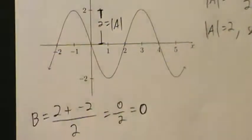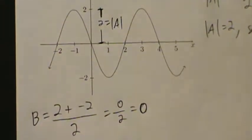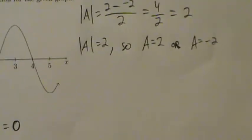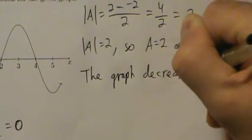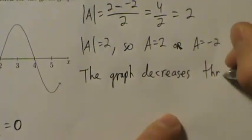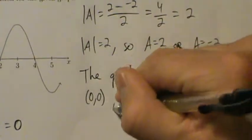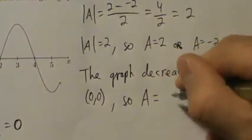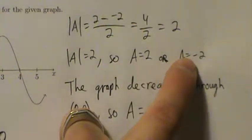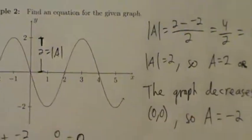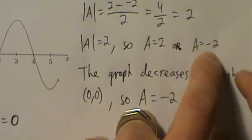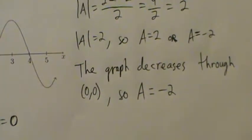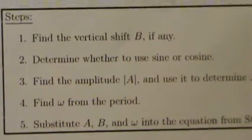Since the graph decreases through (0, 0), that tells us the sine function was flipped upside down, so A must be negative. Since A has to be either two or negative two and must be negative, A equals negative two. That's it for step three.